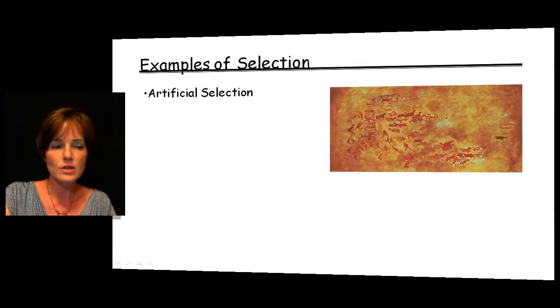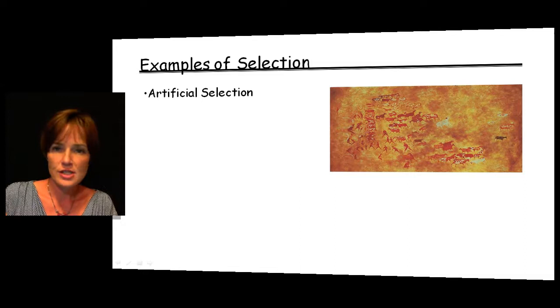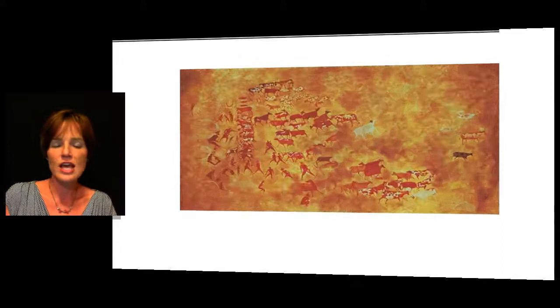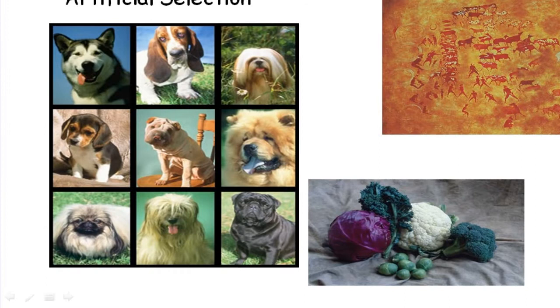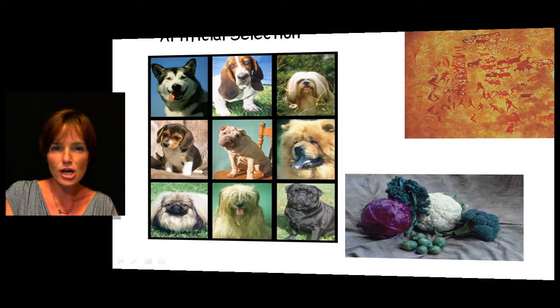One of the things Darwin looked at when developing his theory of evolution and natural selection was artificial selection, which he discussed in The Origin of the Species. This is selective breeding, and it has occurred for hundreds of years — there are even cave paintings showing that back in BC times people were selecting cattle with traits that were important to them. If we look at the effects of artificial selection, think about all of the different dog breeds we have today. All of those dog breeds had a common ancestor at one point, but when we look at dogs today, there is such variety.